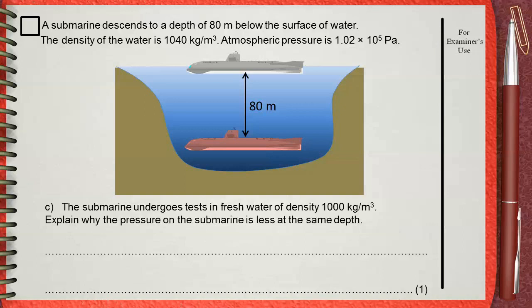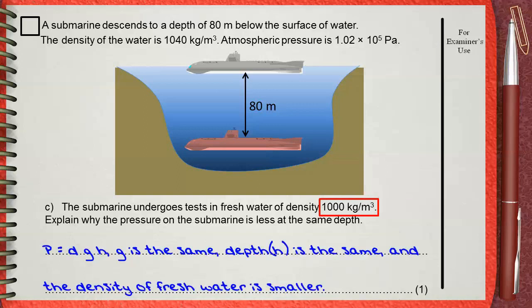If we apply the rule, P equals DGH, where P is pressure, D is the density, G is the acceleration due to gravity 10 meters per second squared, and H is the depth. When the submarine moves from seawater to freshwater, G is the same, and the depth is also the same. This is mentioned in the question. But density of freshwater is smaller. This is why the pressure will be smaller.